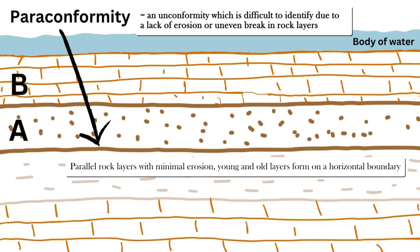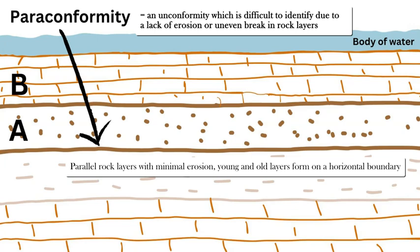The paraconformity is more unique and rare. It still represents a period of missing time from deposition — a hiatus of erosion and weathering — however there is no clear indication of an uneven surface. Both layers are horizontal and parallel to each other, making the unconformity not very visible or obvious. Unlike the nonconformity, disconformity, or angular unconformity, which are easy to spot, the paraconformity is very hard to identify.